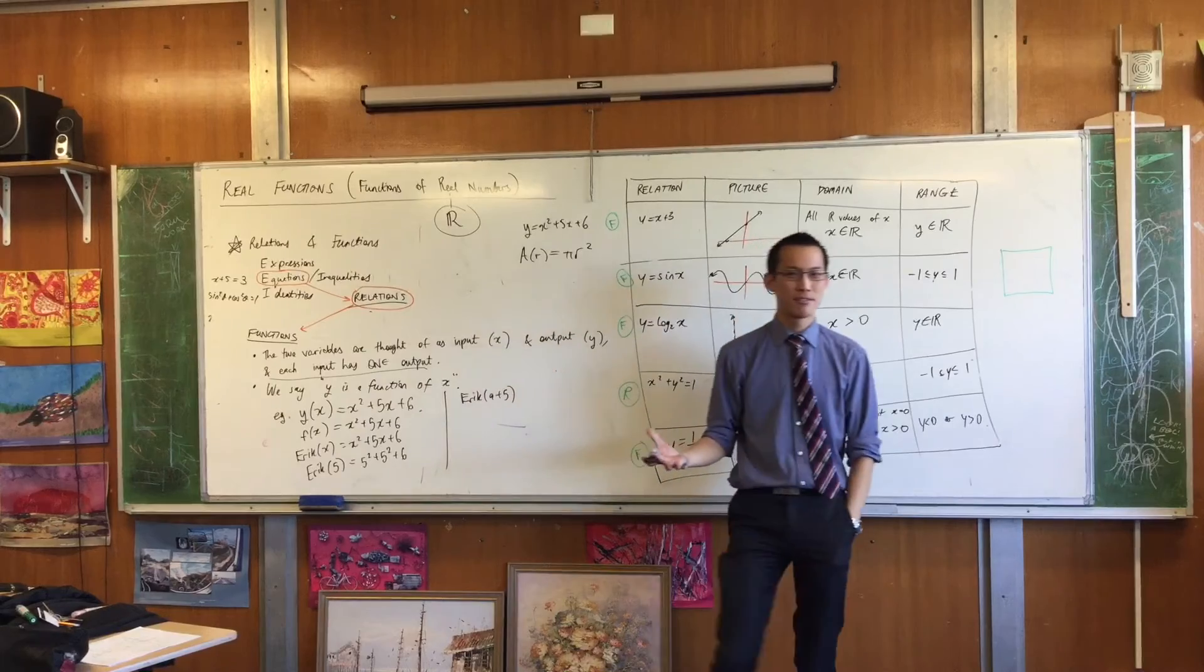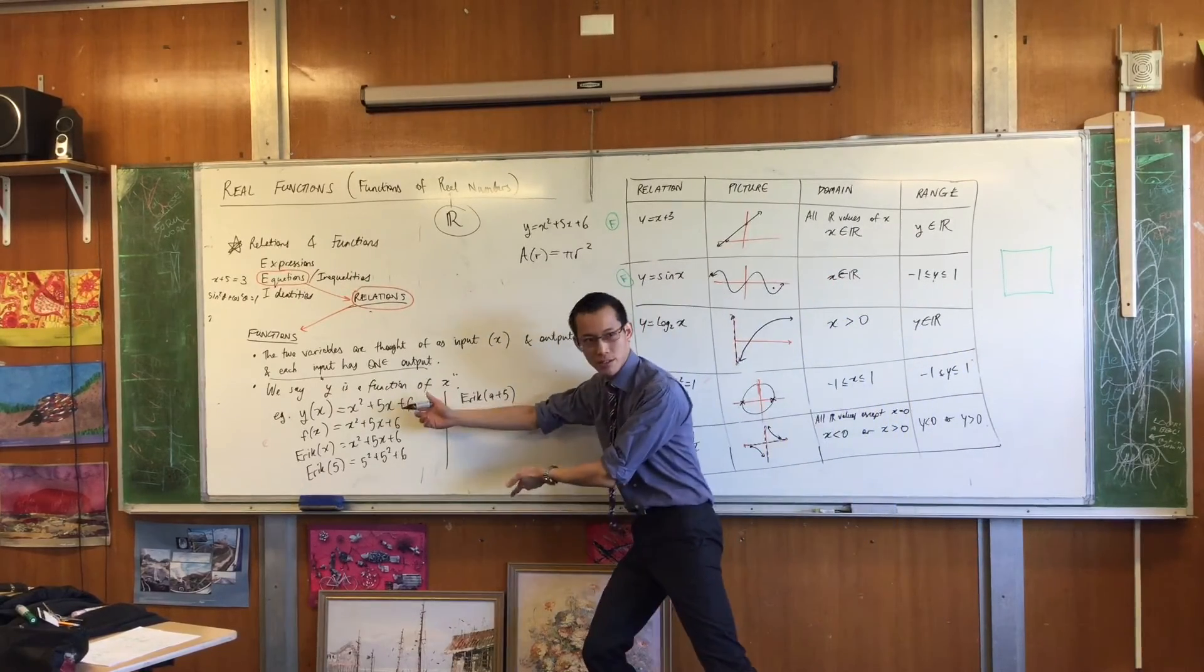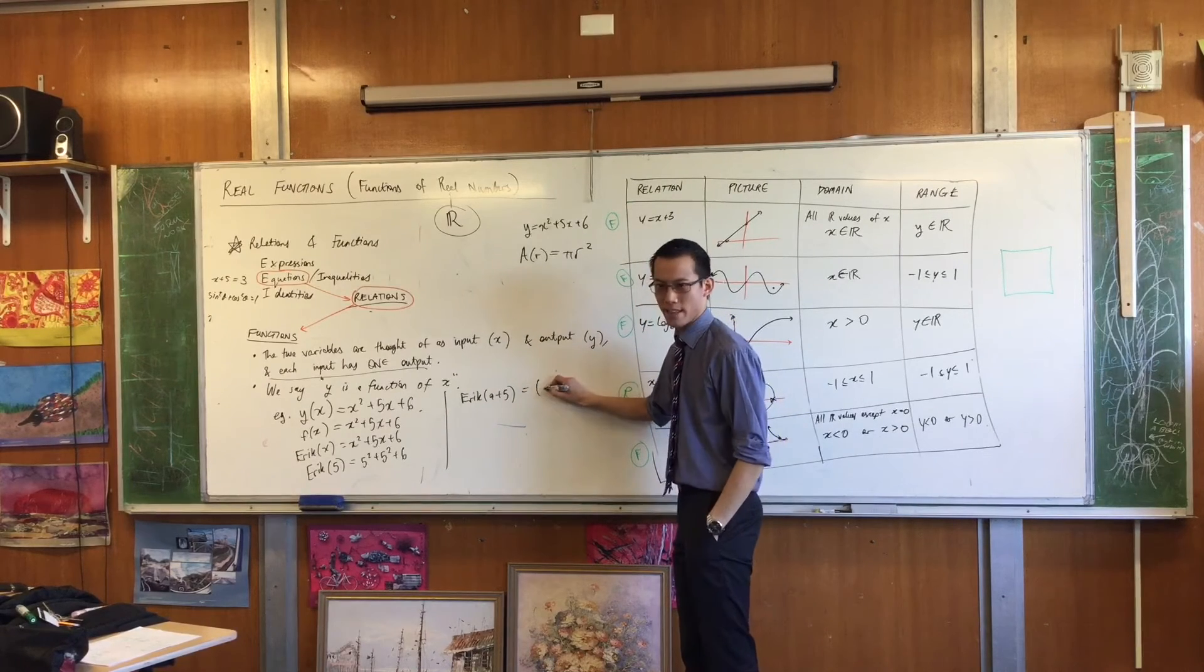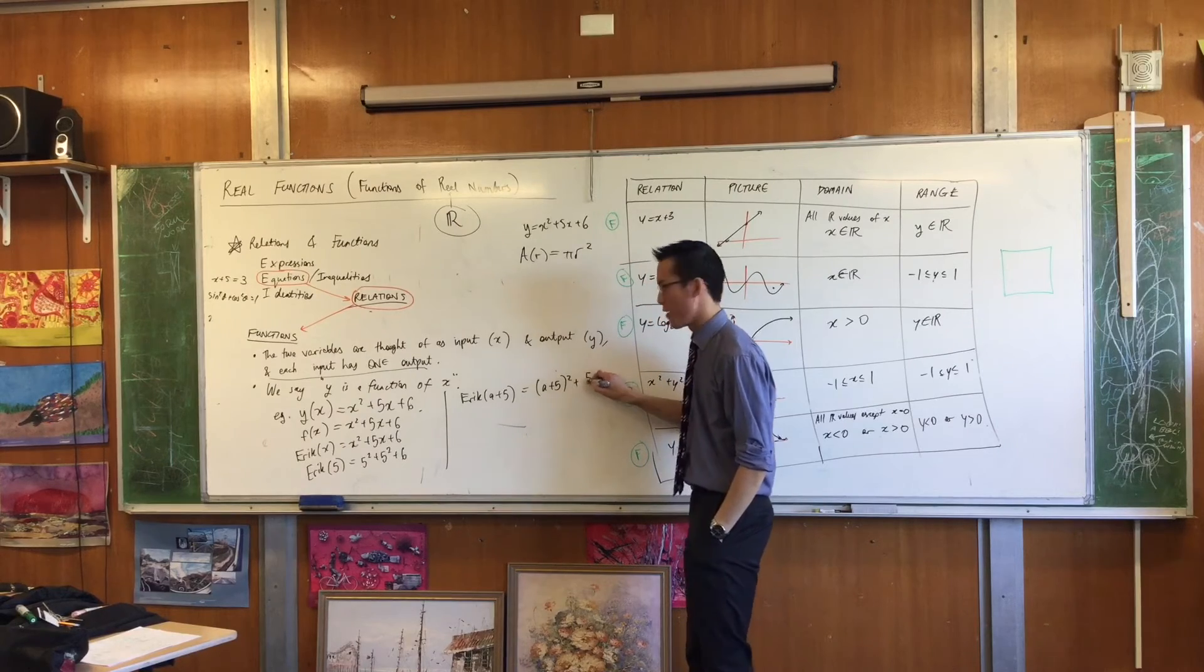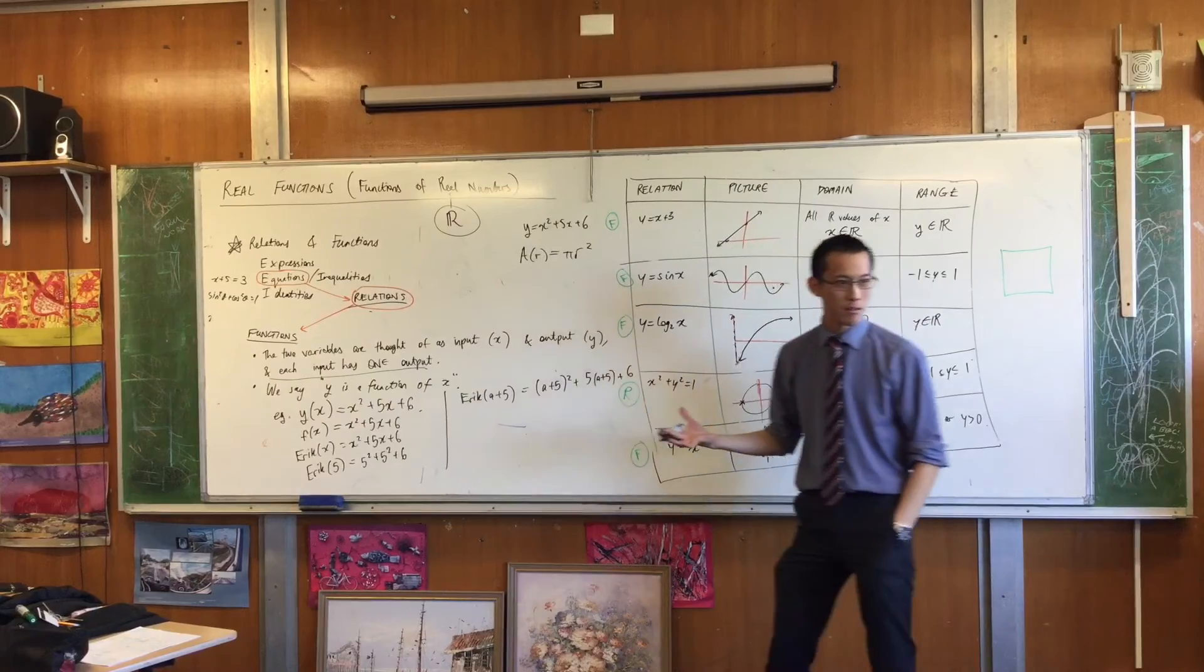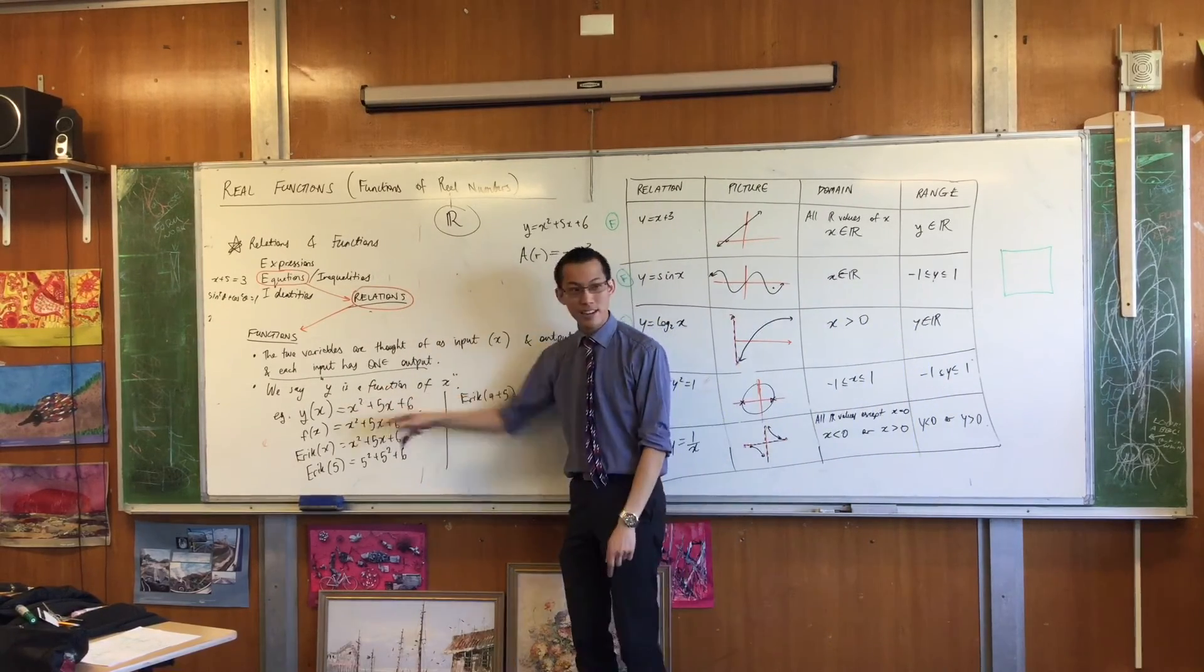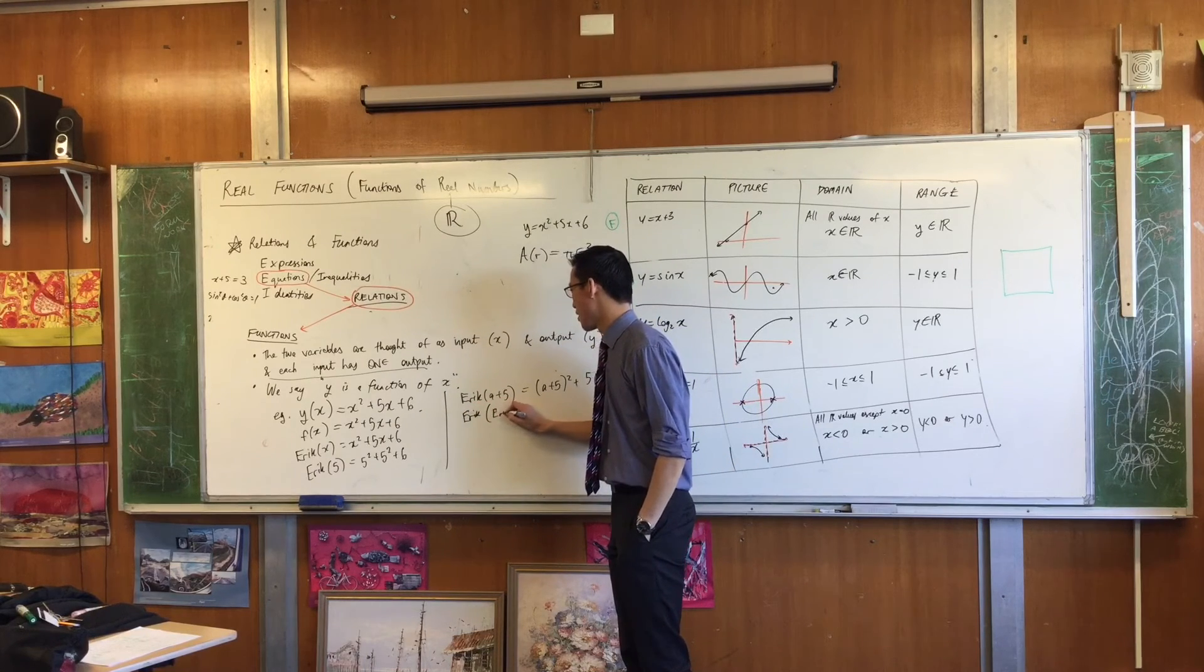You can put in other algebra. So for example, you could go Eric of, I'm just, this is just too much fun, so I'm going to stop now. I could go Eric of A plus five. Right? So all that would mean is, everywhere I saw X, I'm going to put in A plus five. I'm not going to expand this, but it would be A plus five squared plus five lots of A plus five plus six. Do you agree?